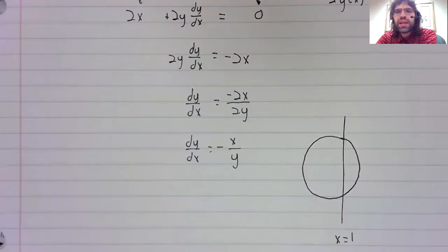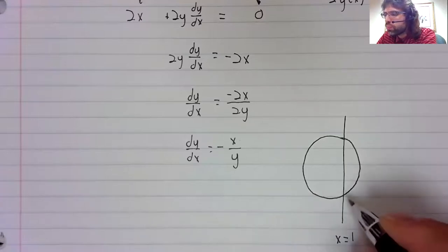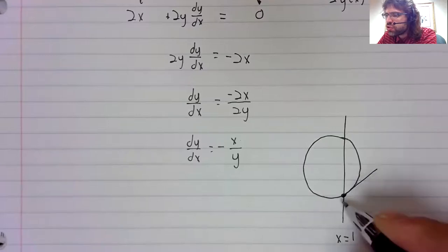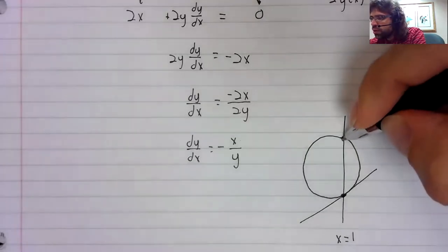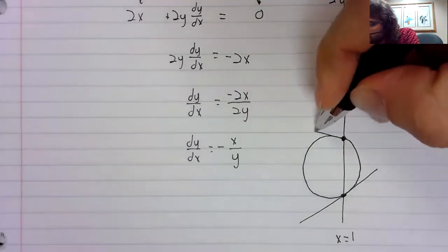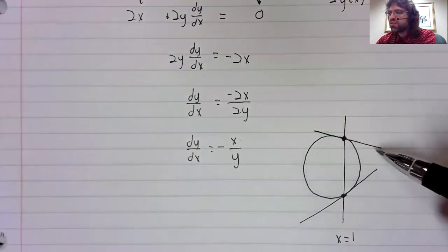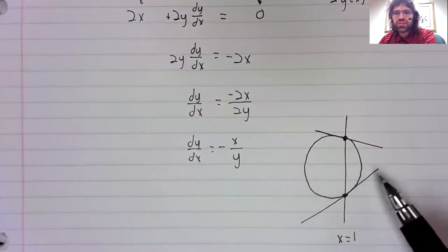Suppose we have x equals one and we ask, what is the slope of the tangent line at x equals one? Well, that is a question without an answer. The slope of the tangent line could be the slope of this line, or it could be the slope of this line.